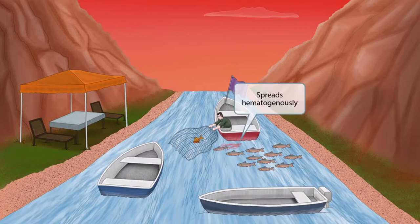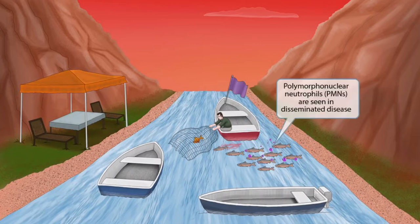Next, notice that we've shown a fish bleeding in the water. He must have been caught earlier and then let loose, and now we can see a trail of blood behind him. The trail of blood is here to help you remember that Salmonella spreads hematogenously.